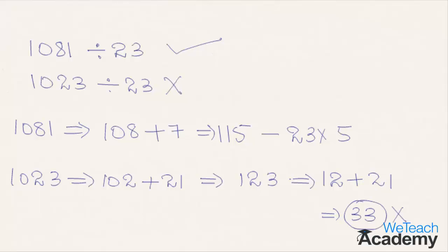So here we can say that to check whether a number is exactly divisible by 23, add 7 times the last digit to the remaining number. If the result is divisible by 23, then the given number is also divisible by 23.